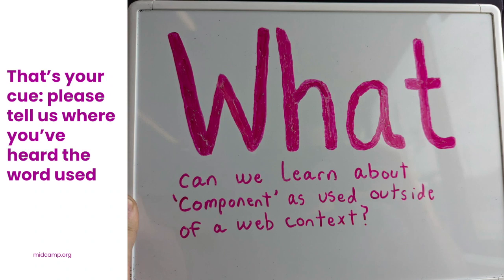What else can we learn about components on the web from how the word 'component' is used in real life? A component is a unit of a larger organism — small components can be used to comprise a larger system, just like a car engine.